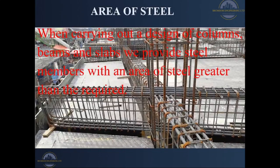Hello, welcome to BromTech Engineering. My name is Nginon Tsongo and today I'm going to take you through a study of how to determine the area of steel that you have provided in your columns, beams and slabs. Whenever we design structural elements, we normally design for a minimum area of steel and we provide an area of steel greater than the minimum we have determined from the design code. Today I will guide you through how to use the bar numbers and the spacing to determine the area of steel of the bars that you have provided.